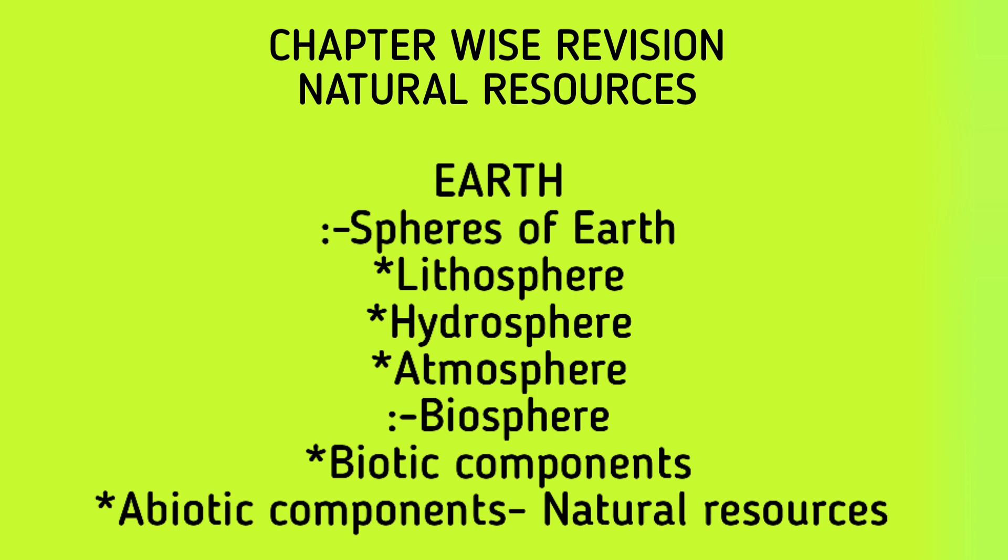Our next chapter is chapter 14, Natural Resources. First, we completed about the Earth and its spheres. The first is lithosphere — the outer crust of the Earth. The second is hydrosphere — water on the surface and underground water. The third is atmosphere — where air covers the Earth as a blanket. The fourth is biosphere — the life-supporting zone of the Earth.